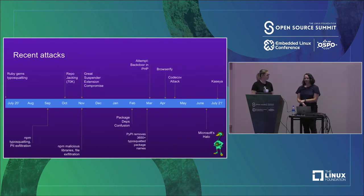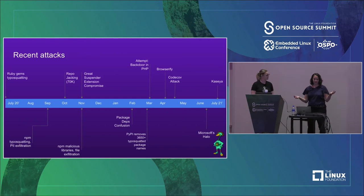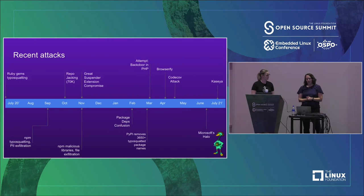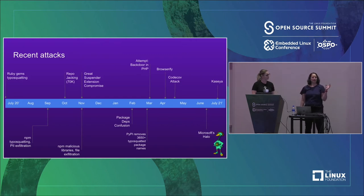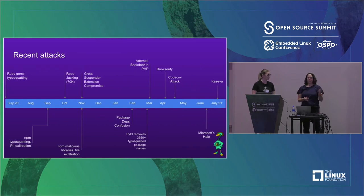This is not just theoretical - here's a timeline of recent attacks we've seen in the last couple of years. RubyGems found 760 typosquatted packages in the repository and had to pull them down. The Great Suspender attack was an account takeover where someone said they wanted to help out with the project, earned the owner's trust, took it over, and started putting malicious code into a very popular Chrome extension, which was subsequently taken down. And the Microsoft Halo attack was a dependency confusion attack that we saw recently.